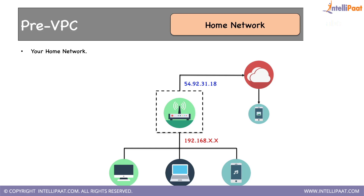The receiver thinks that the message has come from an IP address like 54.92.31.18, which is the router's public IP address. All devices behind the router are said to be in the LAN. If the laptop wants to send a message to the desktop or phone, it can be delivered by the router and does not have to go to the internet. Devices within the LAN communicate using private IP addresses — in this case, 192.168.something.something. All devices' IP addresses will start with 192.168 within the LAN. On a Windows machine you can type ipconfig; for Linux machines you can use the ifconfig command to check your machine's IP address.